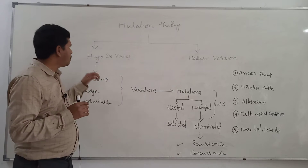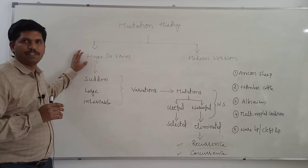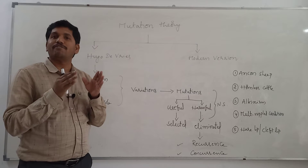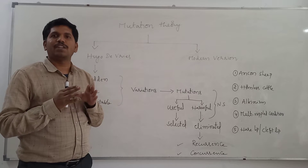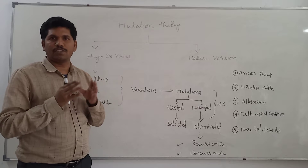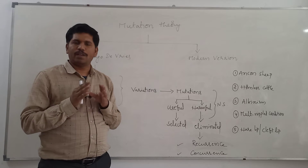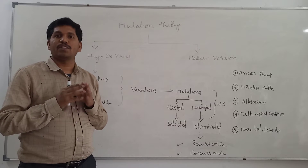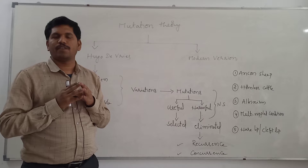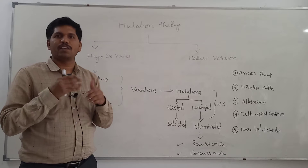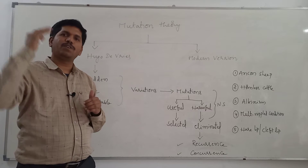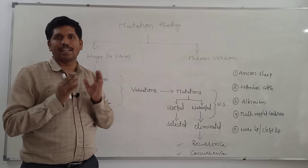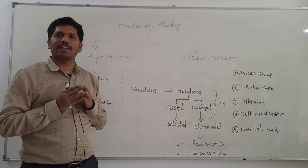Let us first discuss the mutation theory of Hugo de Vries. According to Hugo de Vries, mutations are nothing but variations which are sudden, large, and inheritable. He observed that in certain plants and animals, suddenly some large variations appear, and from then onwards they will be inheritable — transmitted to a number of generations. They are sudden, large, and inheritable variations.